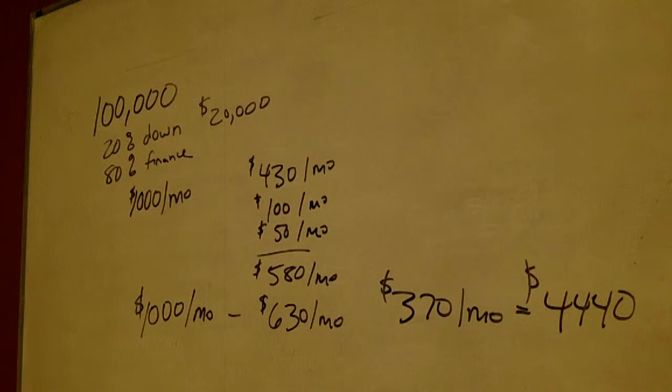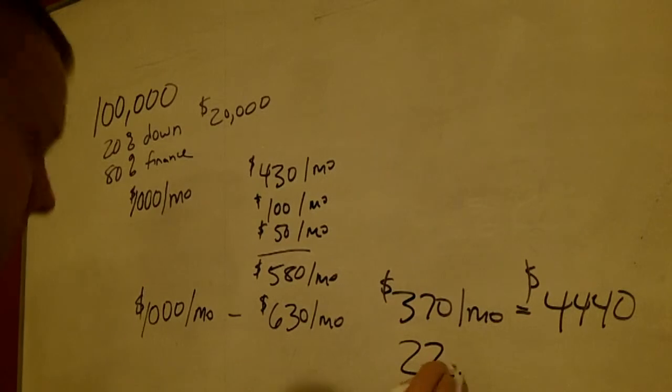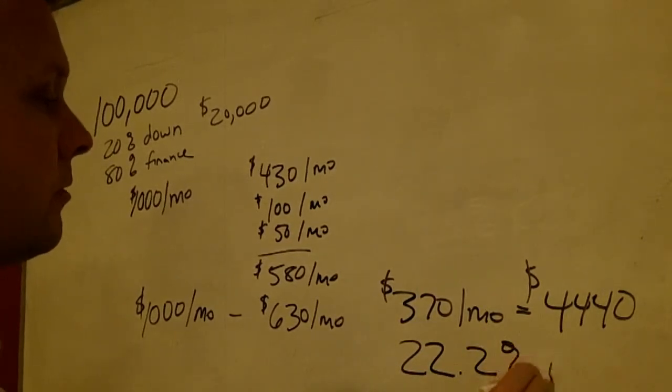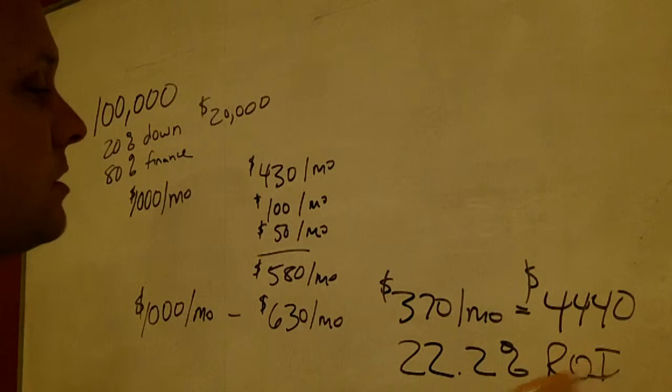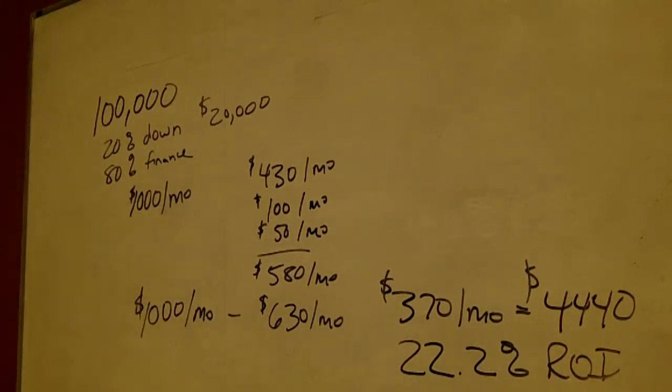Now, instead of paying cash for this one, you financed it. So you only invested $20,000 as your down payment. When you do the math on that, that gives you a 22.2% return on investment. So by using financing as leverage, you actually get a higher return on your investment.